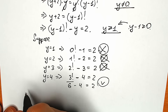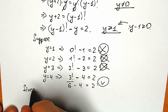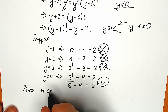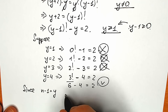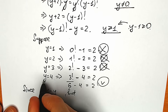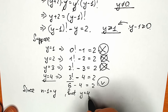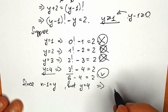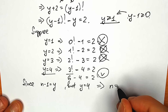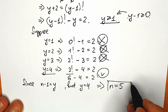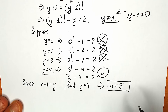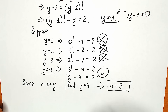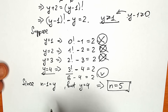Don't forget our substitution: n−1 = y, and we found y = 4. So from here, n is equal to 5.